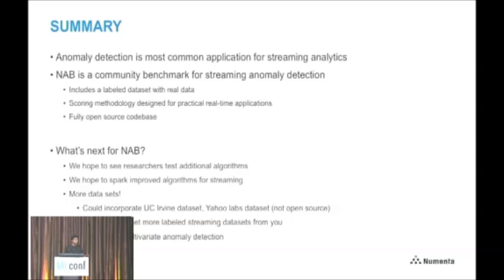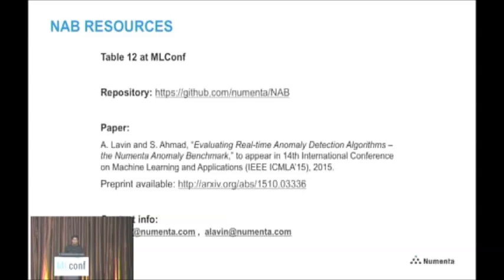There's a possibility of incorporating data sets from UC Irvine, which has some nice streaming data sets. Yahoo Labs released a streaming data set earlier, but it's not currently open, so we can't incorporate it yet — but if they make it open, we'd be able to. We also want to add more features to NAB over time. Currently metrics are a single scalar value plus a timestamp; one possible extension is multivariate anomaly detection. We have a table and are happy to answer questions. The URL for the repository is available, and there's a paper appearing in IEEE ICMLA in December. Thank you.